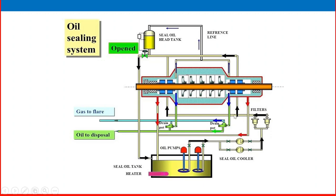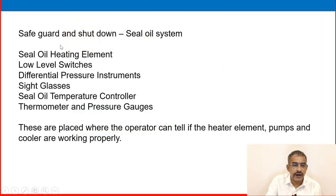The seal oil enters both sides of the sealing system on the shaft, then goes through cooling and returns to the seal oil tank or reservoir. Heaters are provided during winter to ensure sufficient oil flow and prevent the oil from becoming too viscous. Drain and other systems are also present. This completes the overview of the seal oil cooling system.